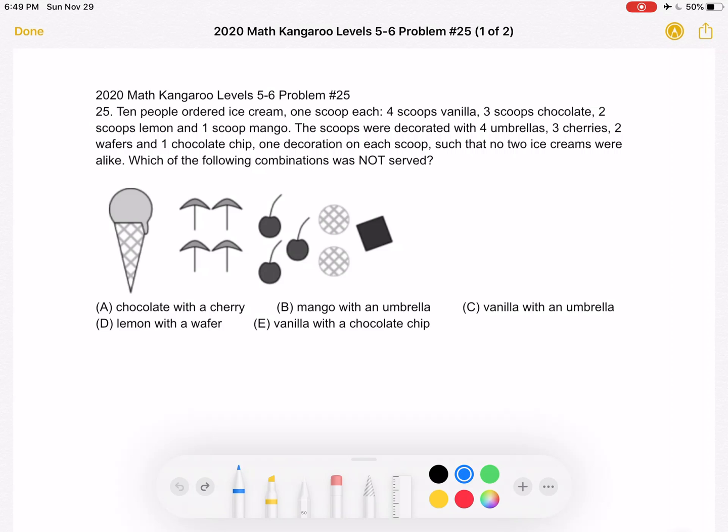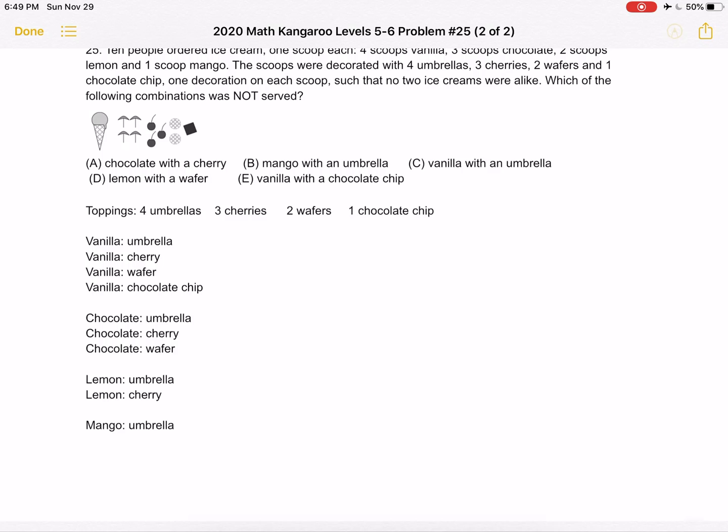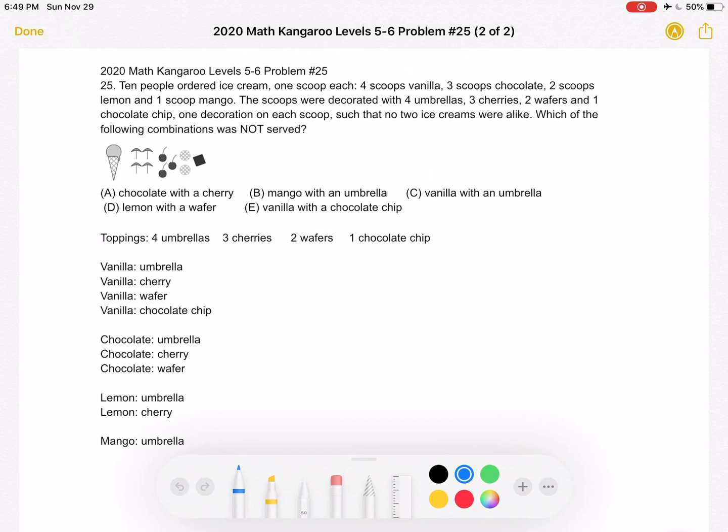This is the problem as it originally appeared on the test and here is where we'll be doing the solution. To start we have toppings which I'm going to place over here as given to us in the problem: four umbrellas, three cherries, two wafers, and one chocolate chip.